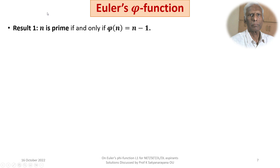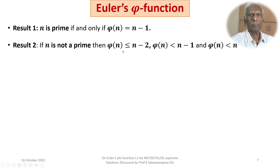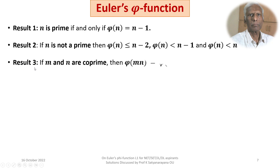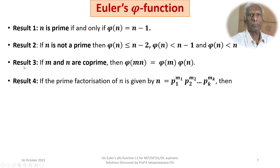We have the following results. Result 1: n is prime if and only if phi(n) = n − 1. Result 2: If n is not prime, then phi(n) ≤ n − 2, and thus phi(n) < n − 1 and phi(n) < n. Result 3: If m and n are relatively prime, then phi(mn) = phi(m) · phi(n). Results 3 and 4 are well known and I am not proving those; Results 1 and 2 I will prove.